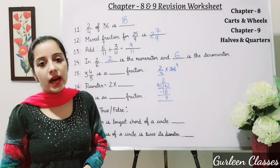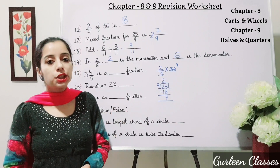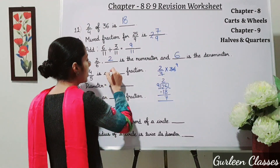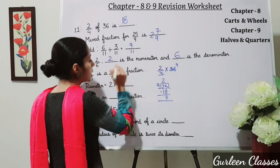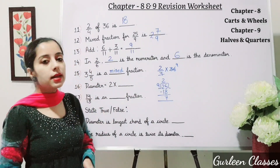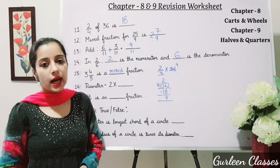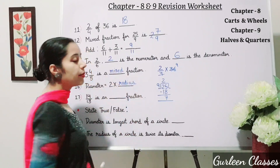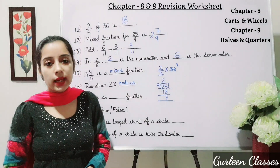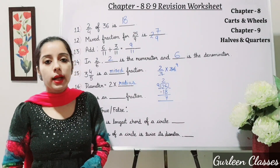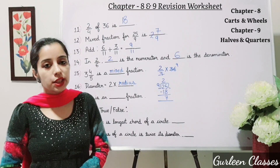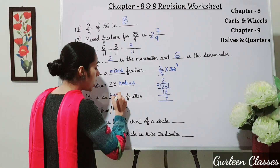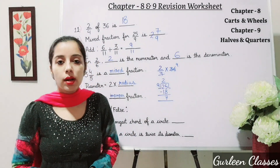So here 2 is the numerator and 6 is the denominator. Next: 3 whole 4 upon 5 is a dash fraction — it is a combination of a whole number and a proper fraction, so it is a mixed fraction. Next: diameter is equal to 2 into radius — diameter is twice the radius. Next: 14 upon 13 is an dash fraction. Here numerator 14 is greater than denominator 13, so it is an improper fraction.